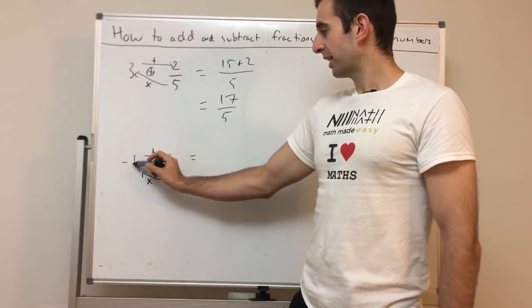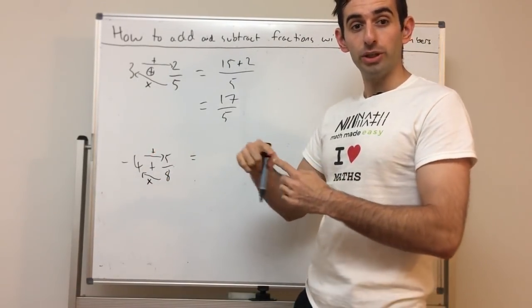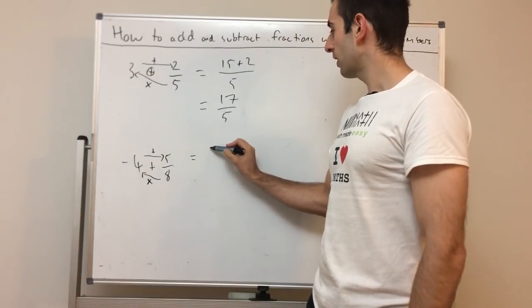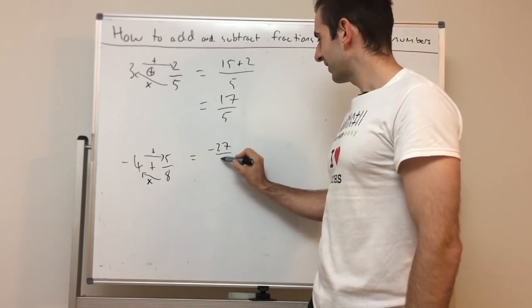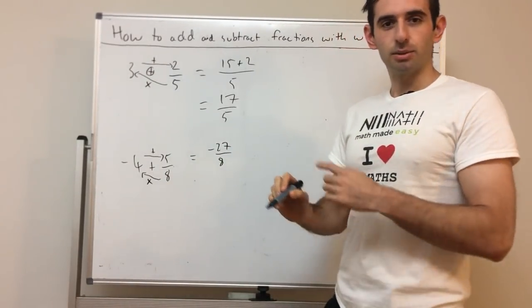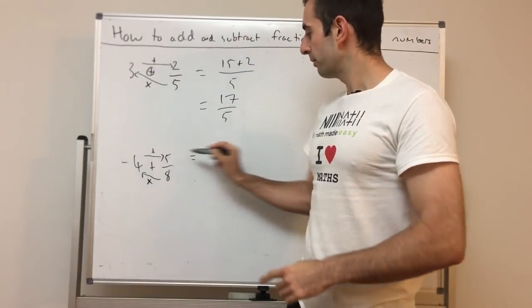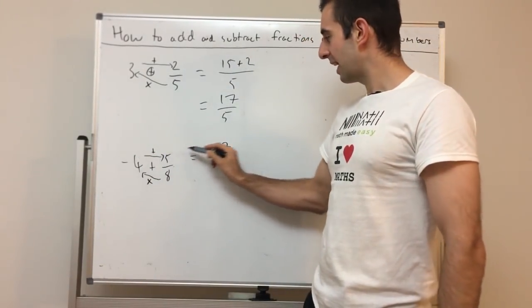Negative 4 times 8 is negative 32, plus 5 is negative 27 over 8. With practice you'll be able to go instantly. It'll be times, add, done.